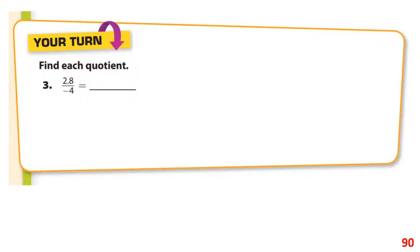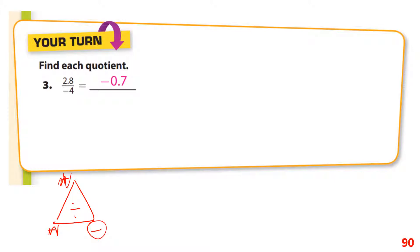On your turn, you're going to divide each of these using the Xero triangle. We have a negative divided by a positive, so the answer is going to be negative. 2.8 divided by 4 is 0.7, so the answer is negative 0.7.